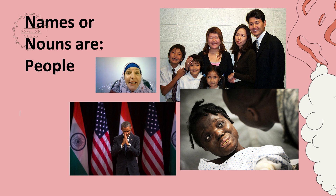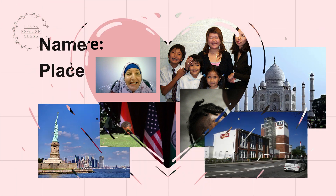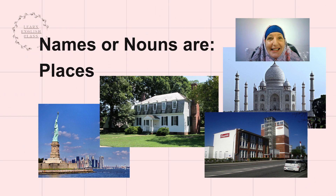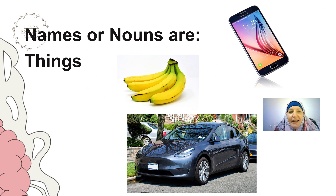Nouns can be people, like your family or the President of the United States. Nouns are places, like a home, an office, the Statue of Liberty, or the Taj Mahal. Nouns are things, like a phone, bananas, or a Tesla Model Y.